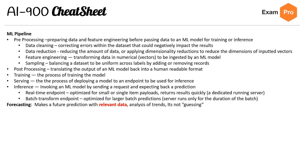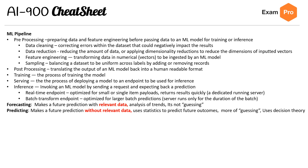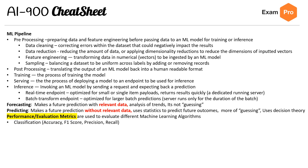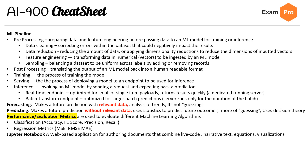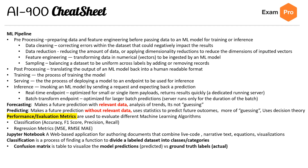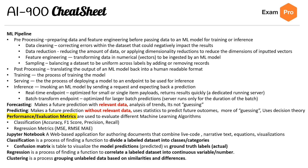Forecasting: making a prediction with relevant data, analysis of trends — it's not guessing. Predicting: making a future prediction without relevant data, using statistics — more of a guess. Using decision theory for performance and evaluation, metrics are used to evaluate different machine learning algorithms. For classification we have accuracy, F1 score, precision, and recall. For regression metrics we have MSE, RMSE, and MAE — remember mean squared error. Jupyter Notebooks is a web-based application for authoring documents combining live code, narrative text, equations, and visualizations. Classification is the process of finding a function to divide a labeled dataset into classes and categories. A confusion matrix is a table to visualize model predictions of predicted versus ground truth — take the time to look up how confusion matrices work because they will absolutely ask you questions on the AI-900 exam. Regression is the process of finding a function to correlate a labeled dataset into continuous variable numbers. Clustering is the process of grouping unlabeled data based on similarity and differences.